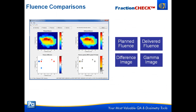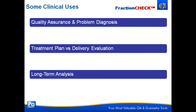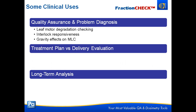The fluence comparisons screen shows the planned and delivered fluences, the difference image, and the gamma image. Adding all that up, what can we actually do in the clinic when we have a tool like FractionCheck? We can do a lot of QA and problem diagnosis — because we have so much information, it's actually a lot easier when we see a problem to figure out what went wrong and how we can fix it.